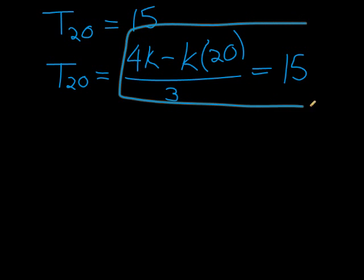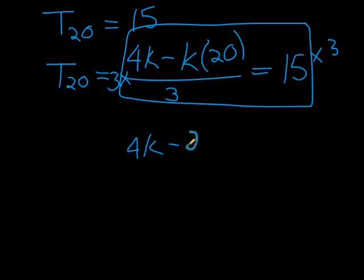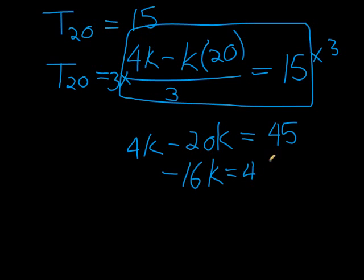This is a normal equation. I just need to solve that equation. I do so by multiplying both sides with 3 to get rid of the denominator. So I get 4k minus 20k is equal to 45. And then finally, I get 4 minus 20 gives me negative 16k is equal to 45. And therefore, k is equal to negative 45 divided by 16.